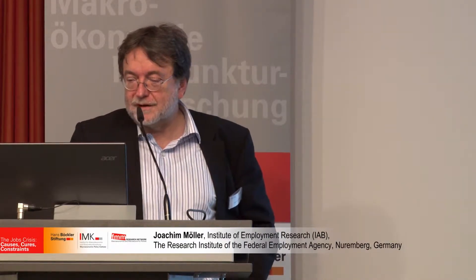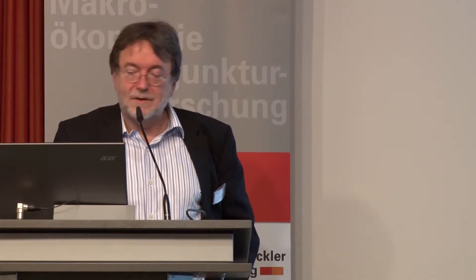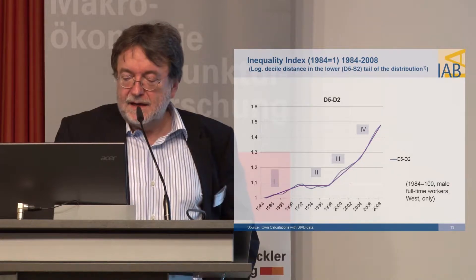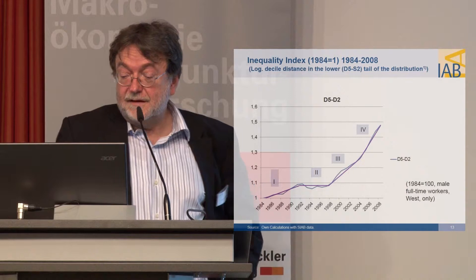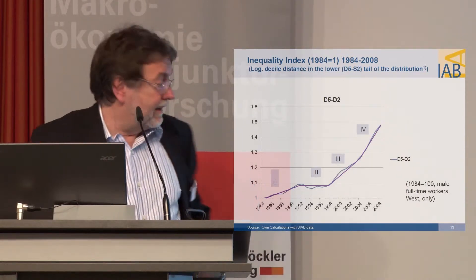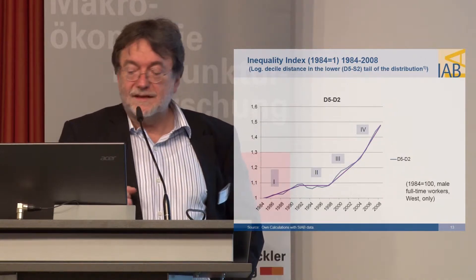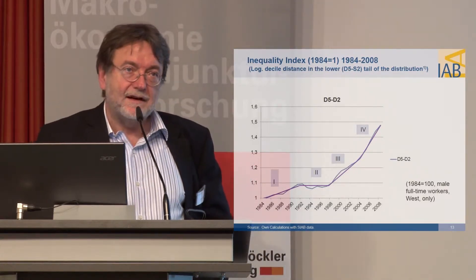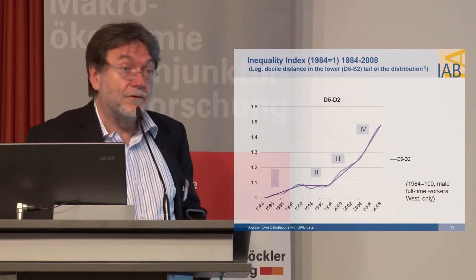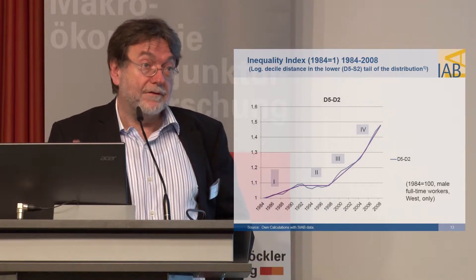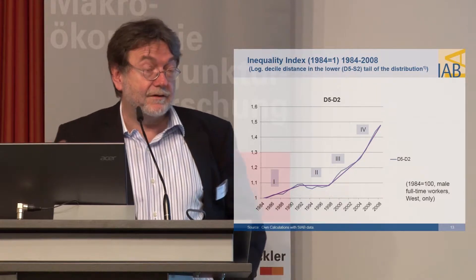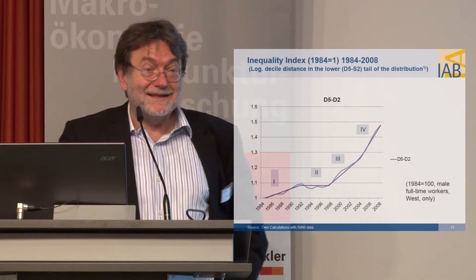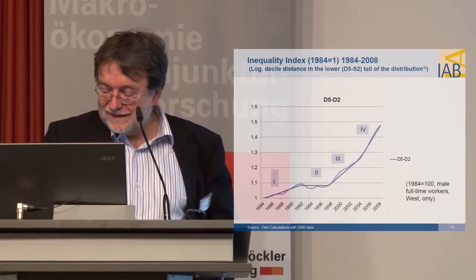Especially young people and the unskilled are typically in precarious or atypical employment forms. Regarding inequality: this gives you the relationship between the median D5 and the second decile from 1984 onwards. You can see three phases: a slight increase in the second half of the 1980s, movement parallel to the axis in the first half of the 1990s, then a quite sharp increase starting in the second half of the 1990s — long before the labor market reforms. But after the labor market reforms, it was accelerating.